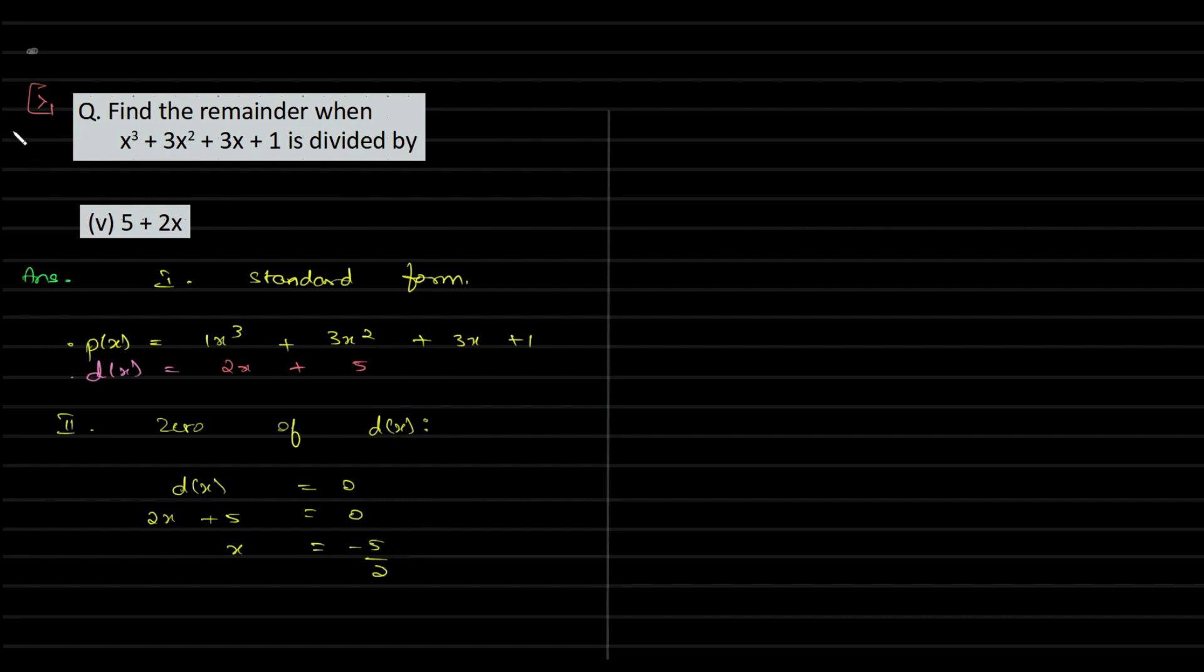We need to substitute x = -5/2 into p(x). So we have p(-5/2) = (-5/2)³ + 3(-5/2)² + 3(-5/2) + 1.